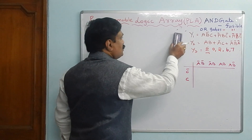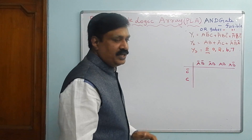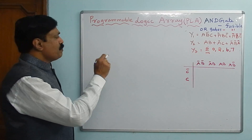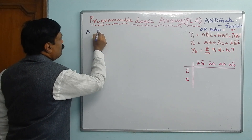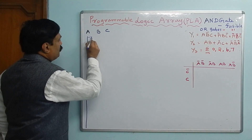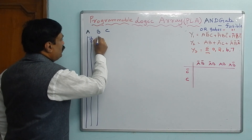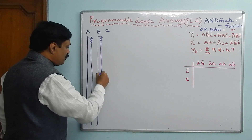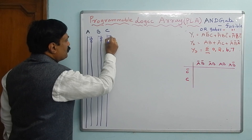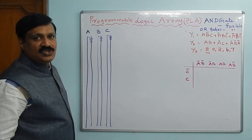Now I will draw the circuit and implement this set of equations in a PLA. It is a three-variable equation, so you have to write three variables A, B, C — variable A and its complement, variable B and its complement, and variable C and its complement. In a standard architecture, we have nine AND-gates connected together.